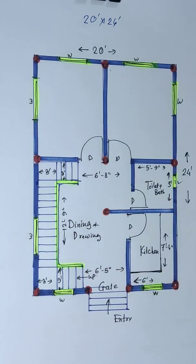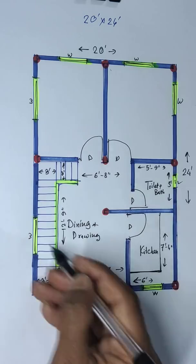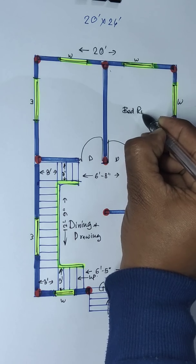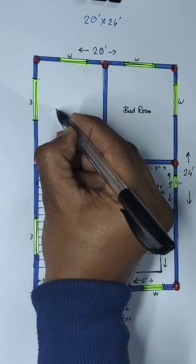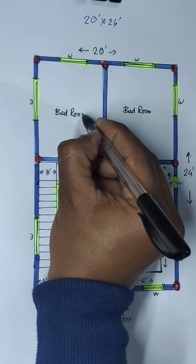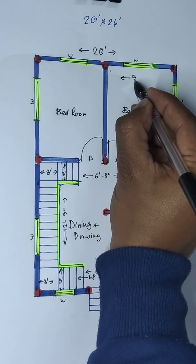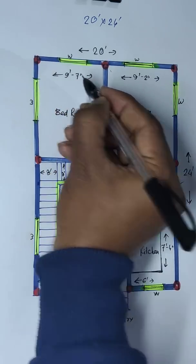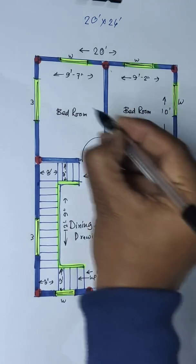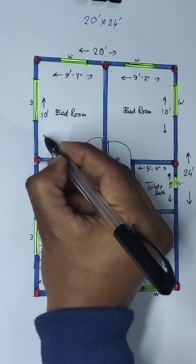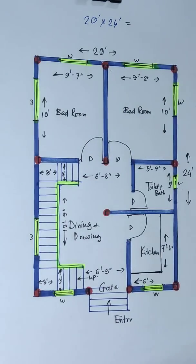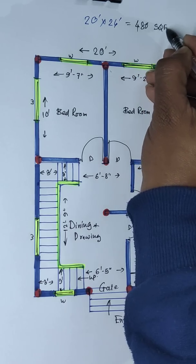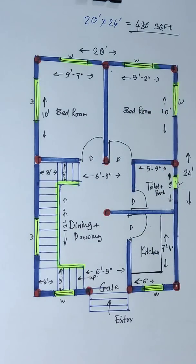Also a 6-feet-wide passage. And this side bedroom and this is bedroom. Distance: 9 feet 2 inch and 9 feet 7 inch. This side 10 feet and this side 10 feet. 480 square feet house plan.